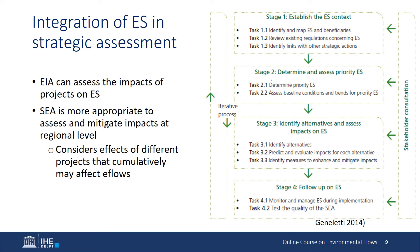The second step is to determine and assess the priority that different ecosystem services might have. It is important to prioritize because it might not be possible to consider all services. Stakeholder input is very important for this prioritization. The next step is to identify alternatives and assess the impacts on ecosystem services that each alternative could have, to define which is the best alternative that provides more services with less impacts for different groups.